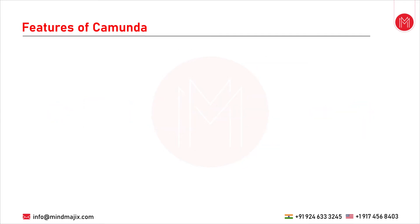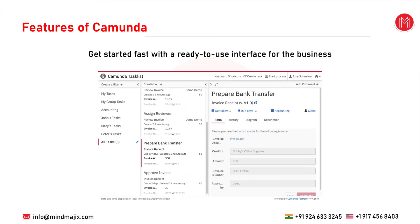With Camunda you get started fast with a ready-to-use interface for your business. Task List is an out-of-the-box web application in Camunda that's tightly integrated with Camunda's process orchestration capabilities. Simply model a business process and deploy it to the workflow engine. When a user needs to work on a task, they'll see it appear in the Task List. Screenshots have been attached for reference — you can pause the video to review them.